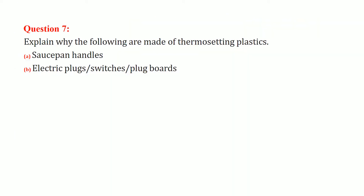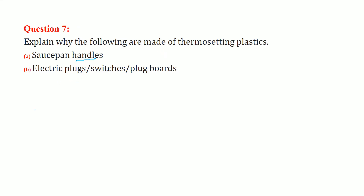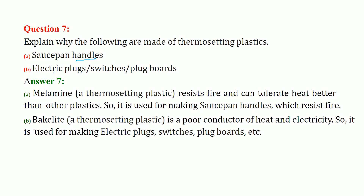Explain why saucepan handles and electrical plugs are made of thermosetting plastic. Melamine, a thermosetting plastic, resists fire and tolerates heat better than other plastics, so it is used for saucepan handles. Bakelite is a poor conductor of both heat and electricity, so it is used for making electric plugs, switches, and plug boards.